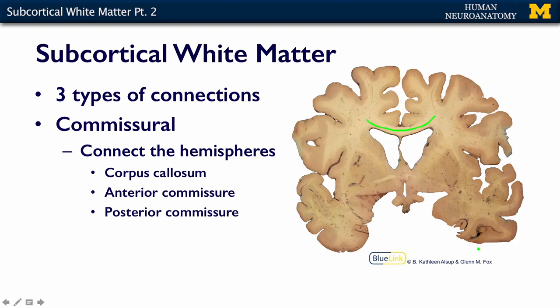There are a few more. There's the anterior commissure, which can be seen partially in this image, and the anterior commissure connects your temporal lobes. For the posterior part of the brain, there's a posterior commissure.